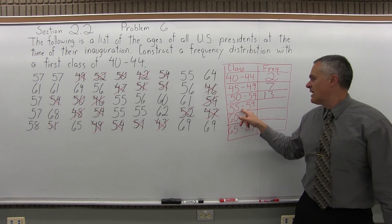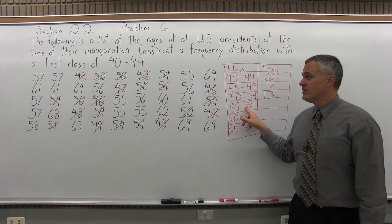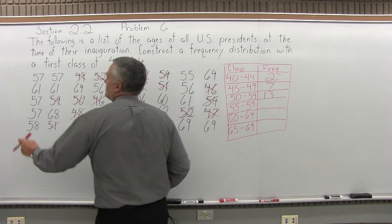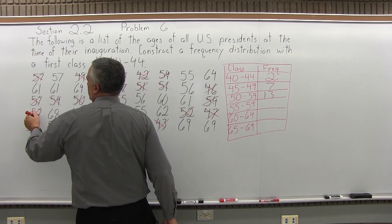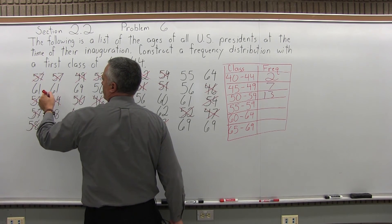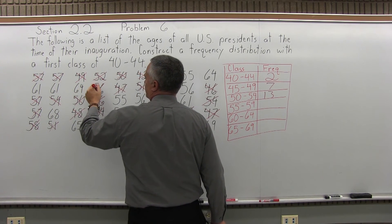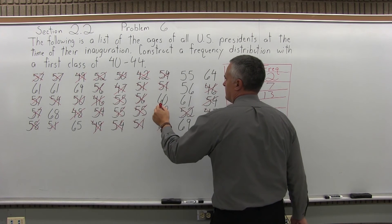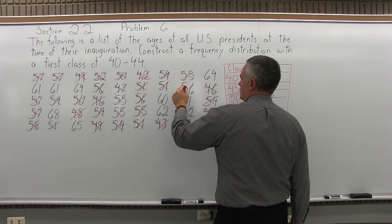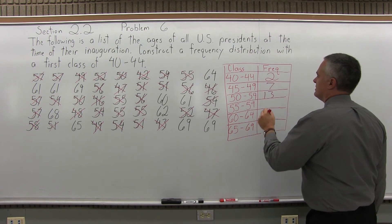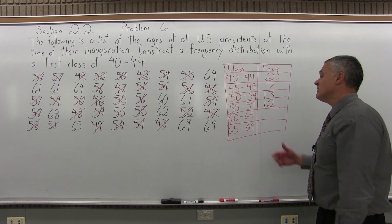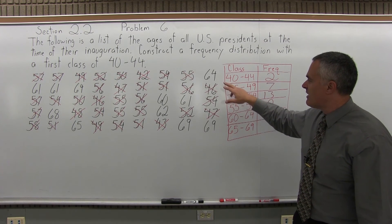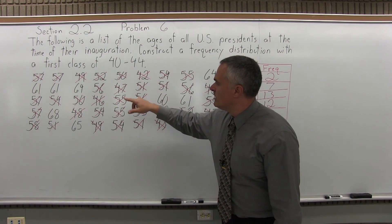The next class: presidents that were between 55 and 59 years old when they were inaugurated — basically anything left that's not crossed off that's 59 or younger. Counting through, I get 12. There were 12 presidents between 55 and 59 years old when inaugurated, so the frequency is 12. Just a quick check — it doesn't look like there's anybody left 59 or younger.